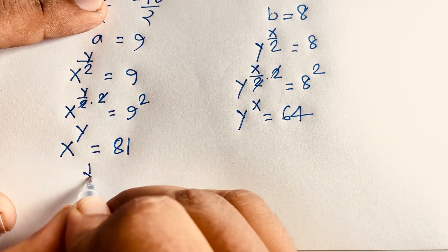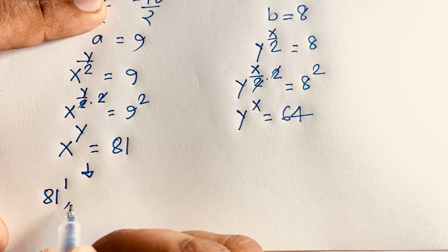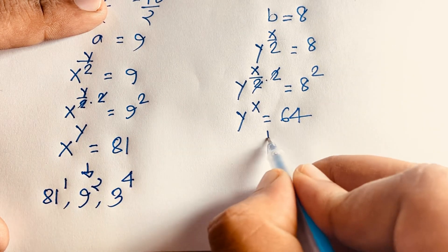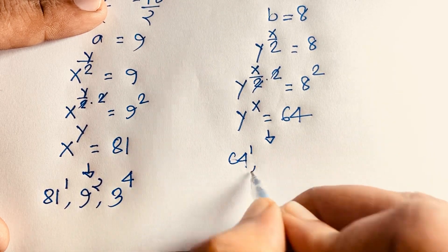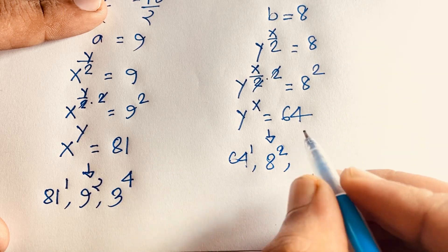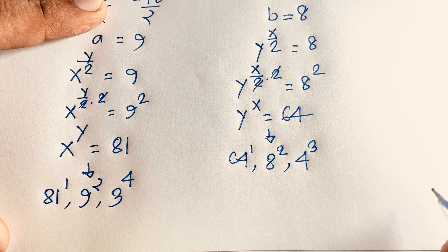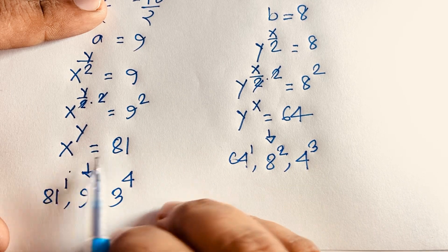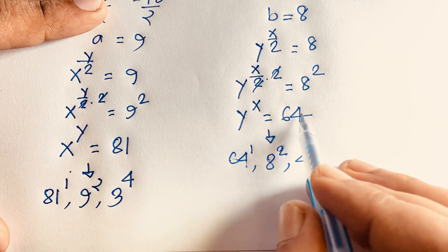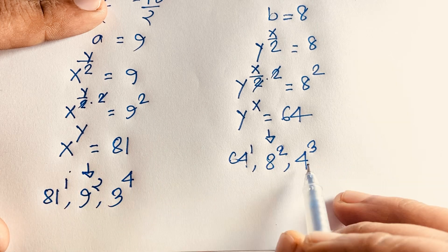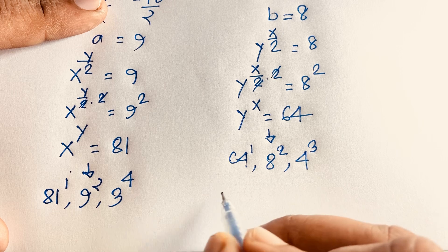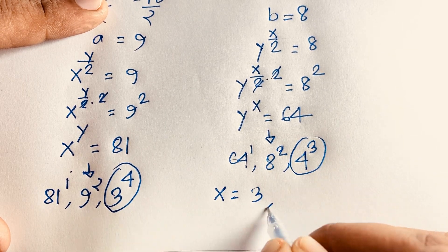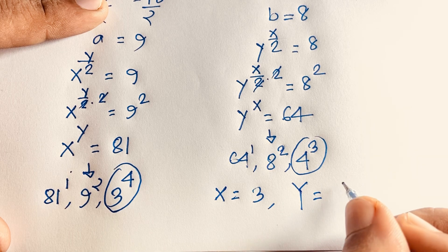Now finding the factors: 81 can be written as 9 squared, or as 3 to the power 4. And 64 can be written as 8 squared, or as 4 to the power 3. For x to the power y, if x equals 3 and y equals 4, then 3 to the power 4 equals 81. And for y to the power x, 4 to the power 3 equals 64. So in both cases, x equals 3 and y equals 4. This is our final answer.